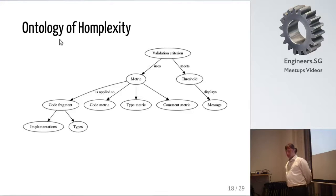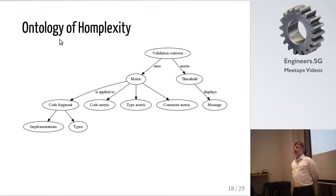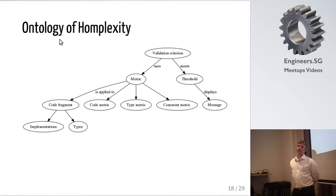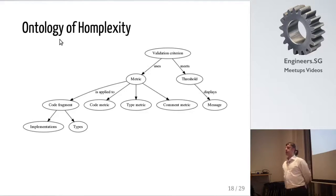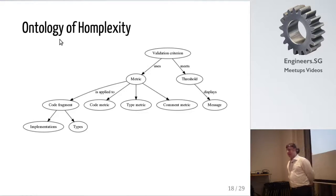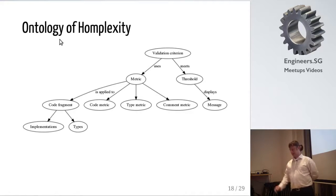The ontology used in complexity is that we have validation criteria based on different metrics. These metrics have thresholds, and depending on these thresholds, we have messages with different severity levels. The metrics are applied to different code fragments — so we may have the same metric applied to different code fragments like function or module. There are different kinds of metrics: comment metrics, type metrics, and code metrics.